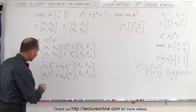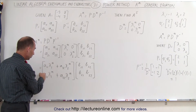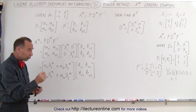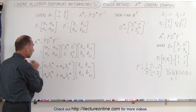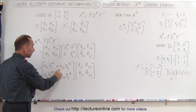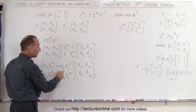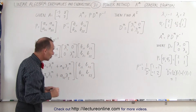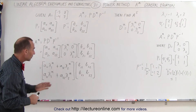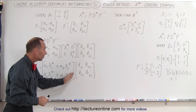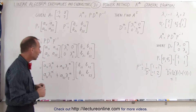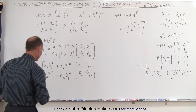Remember that A11 and A21 are the elements of the eigenvector corresponding to lambda 1, eigenvalue 1. And A12 and A22 are the eigenvector elements corresponding to eigenvalue 2. This is an interesting concept. And now, of course, B11, B12, B21, B22 represent the inverse of the P matrix. Now we're going to multiply this again and see what we get.